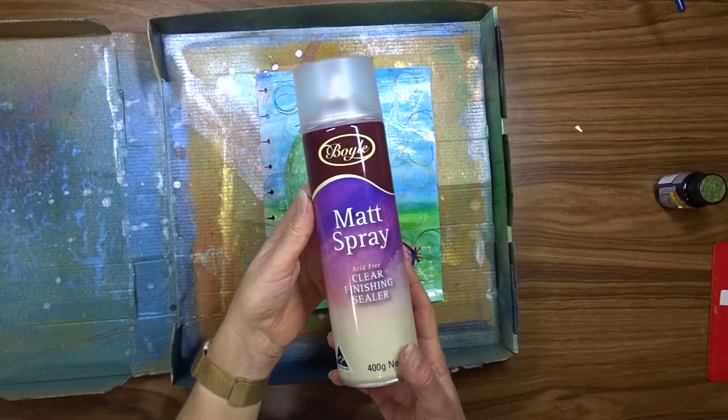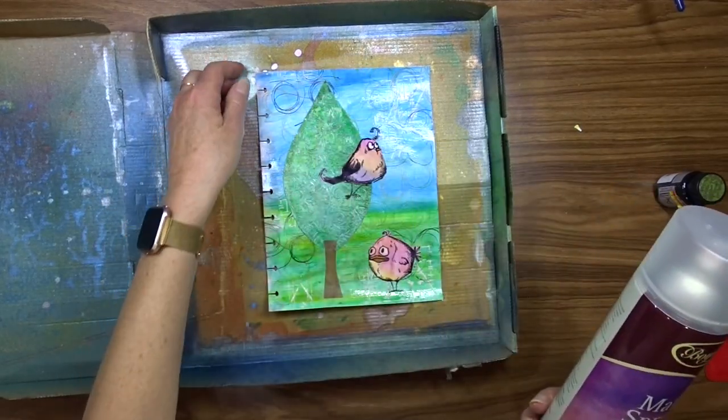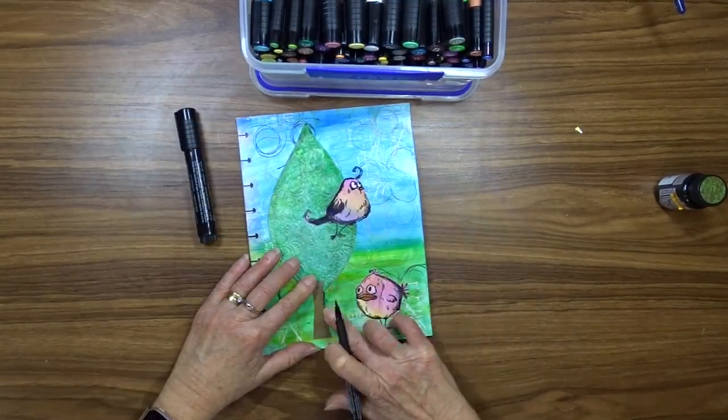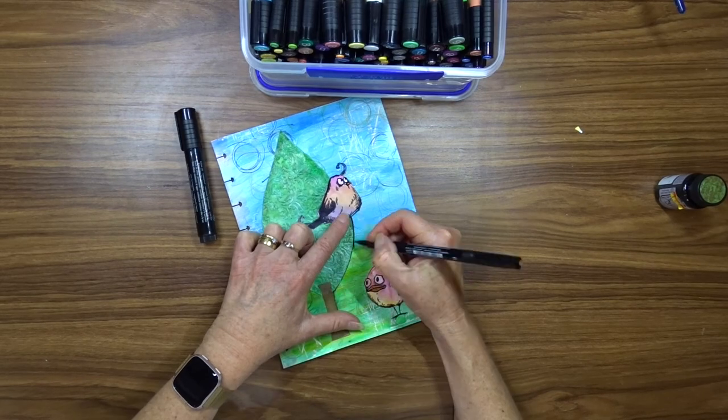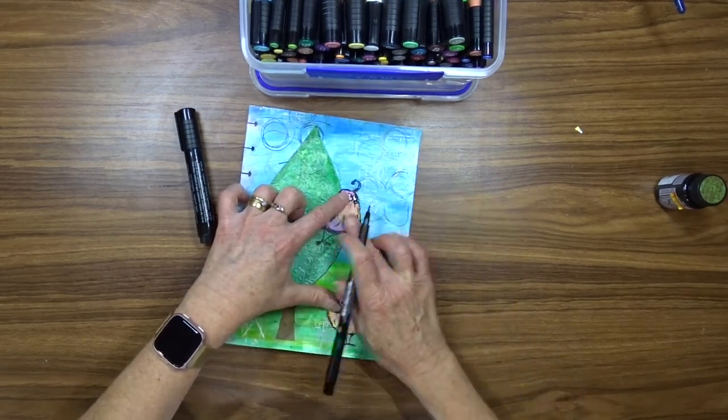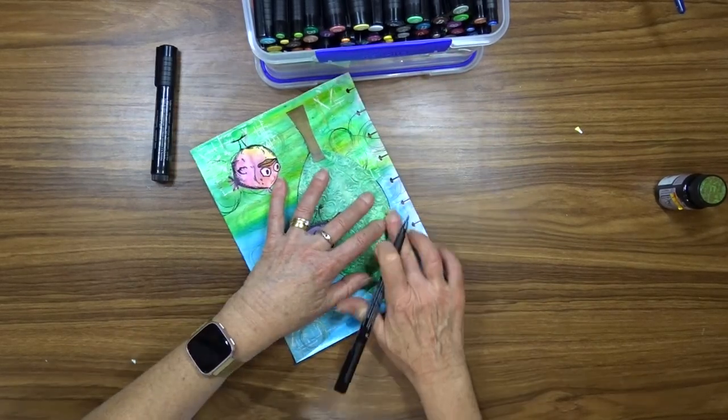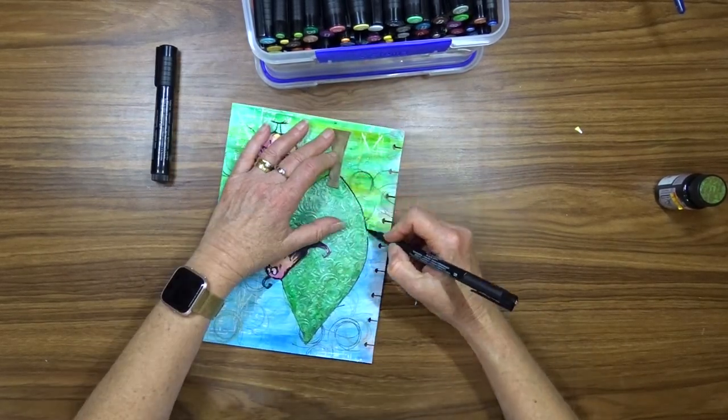Now that my page is assembled I'm going to use some Boyle's Matte Spray to coat the page so that when I do my shading it will not smudge. I'm going to use my Faber-Castell big brush markers. They're an Indian ink marker that takes a few seconds to dry but once they're dry they're waterproof.